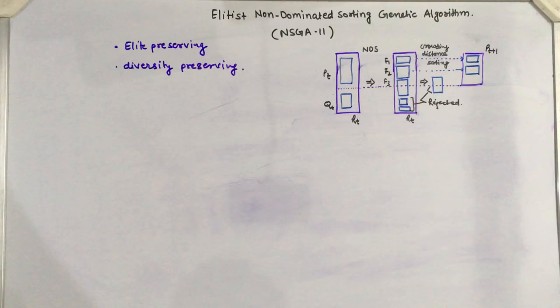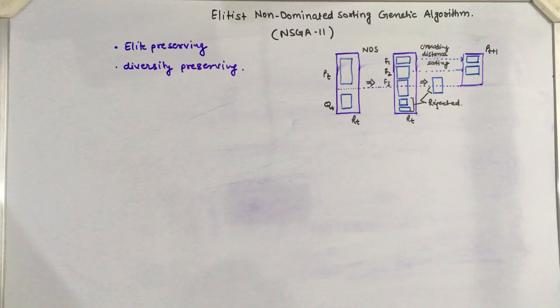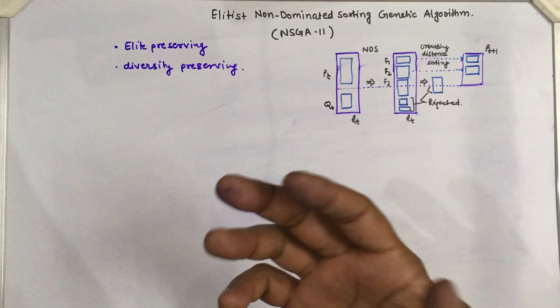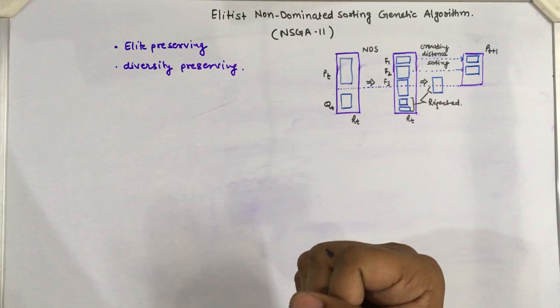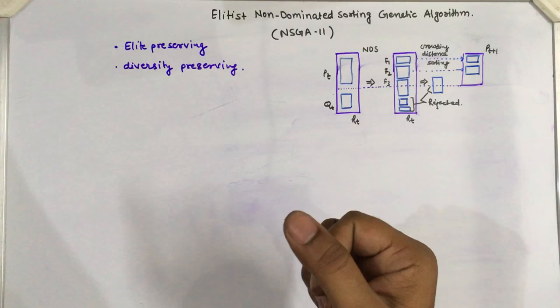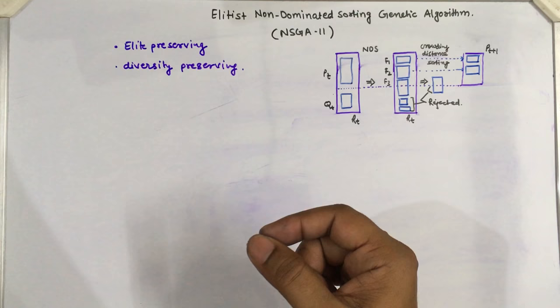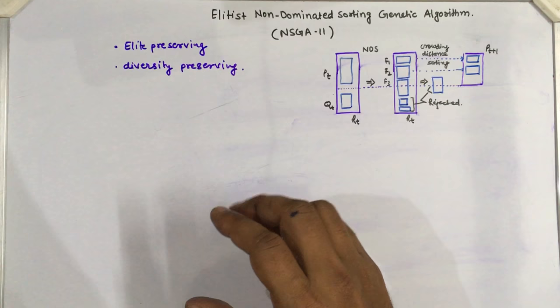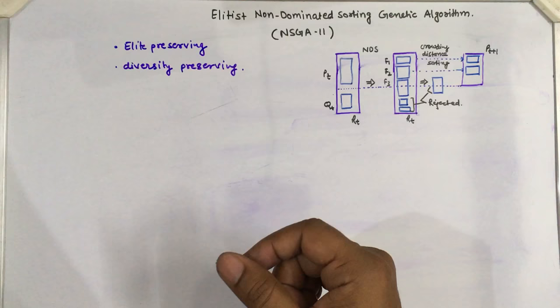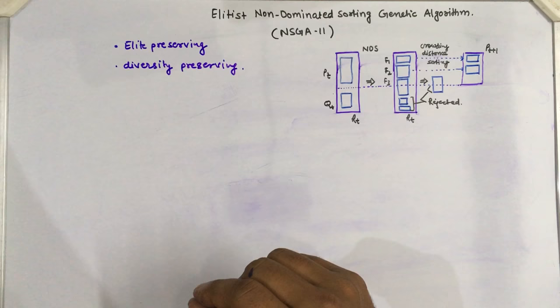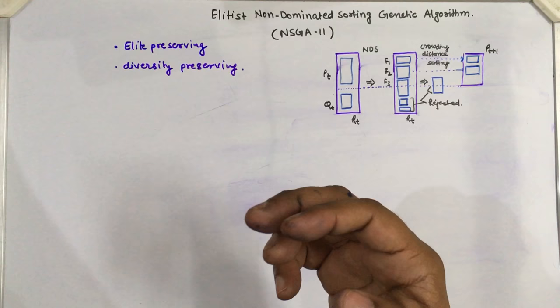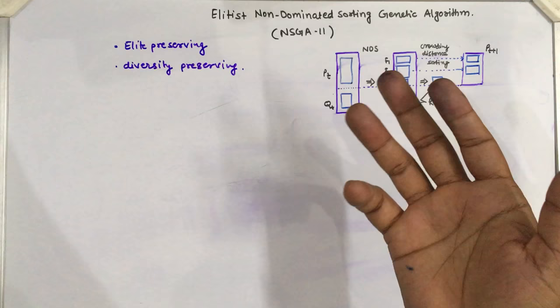The name is NSGA-II, and it is called 'II' because it is an extension of NSGA, known as the Elitist Non-Dominated Sorting Algorithm. Elitism means to keep the best solutions in the next iteration. The author of this algorithm, Kalyanmayadev, observed that there were very few algorithms available implementing the elitism property for multi-objective optimization problems, and he proposed a novel idea of defining elitist solutions in the multi-objective solution space.